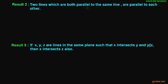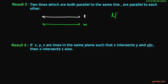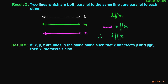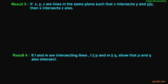The second result: two lines which are both parallel to the same line are parallel to each other. Suppose we have a line L which is parallel to another line M, and here is another line N which is also parallel to M. This means L is parallel to M and N is parallel to M, therefore L and N are also parallel to each other.